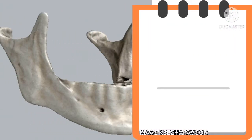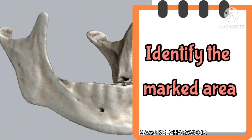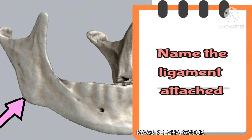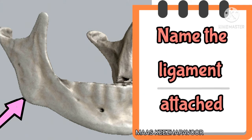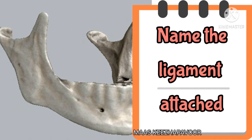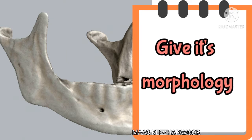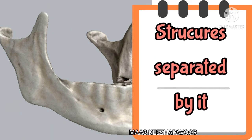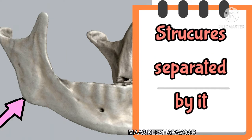Next in session: identify the marked area, name the ligament attached to it, give its morphology, and mention the structures separated by it.